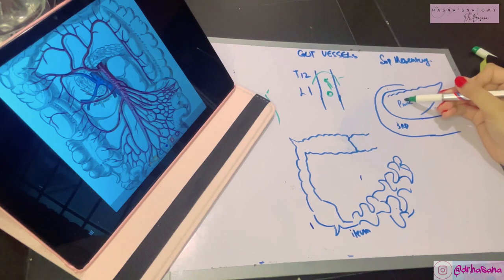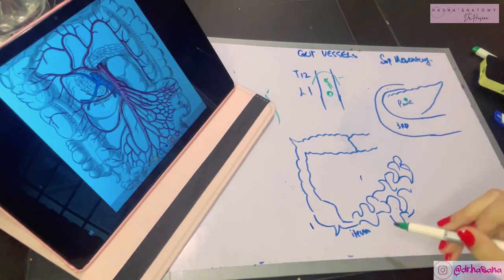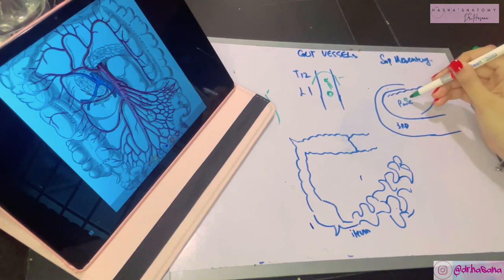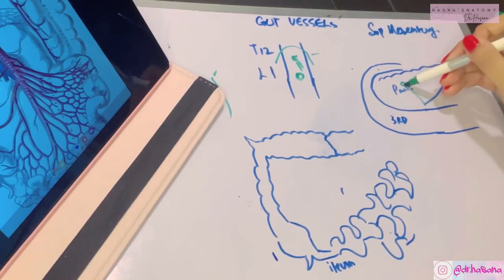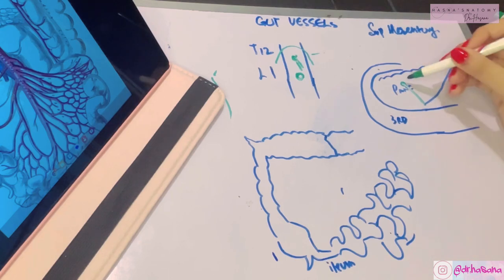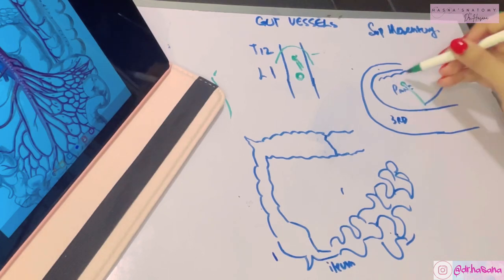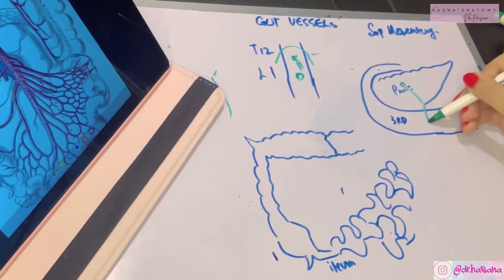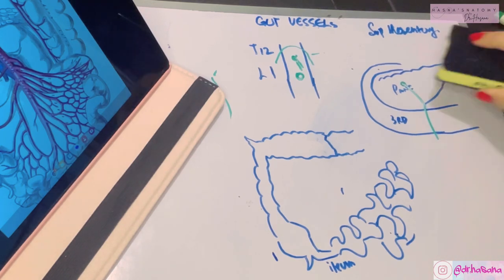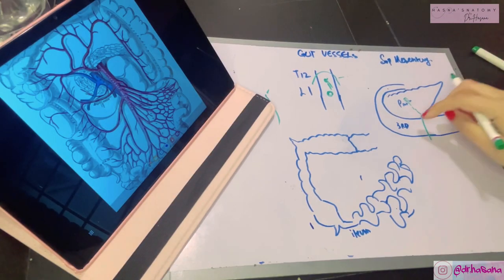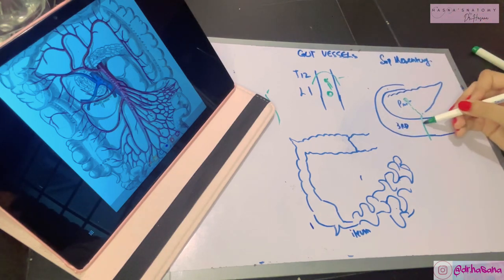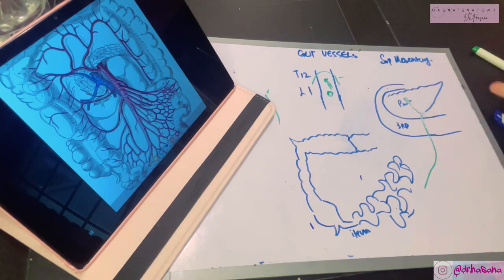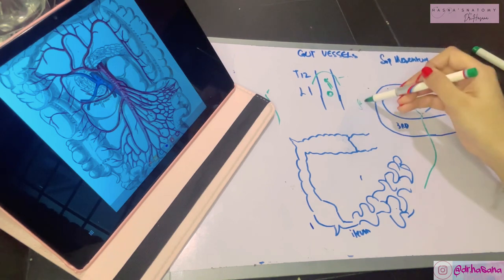The superior mesenteric artery runs downwards and towards the right side, with its convexity towards the left side. It first runs posterior to the pancreas, and when it comes close to the third part of the duodenum — the horizontal part — it comes anterior to it. So remember: posterior to the pancreas first, then anterior to the third part of the duodenum.